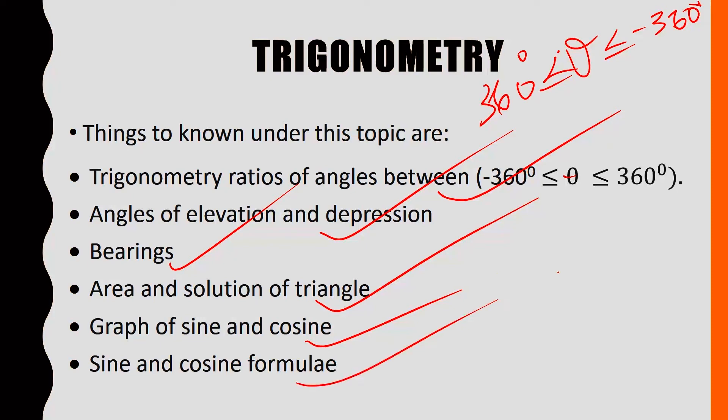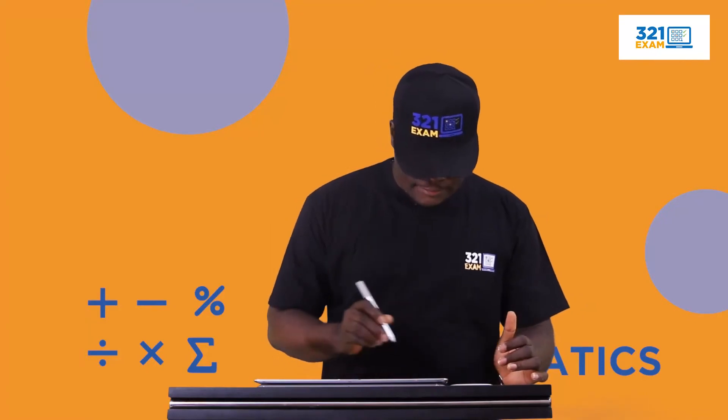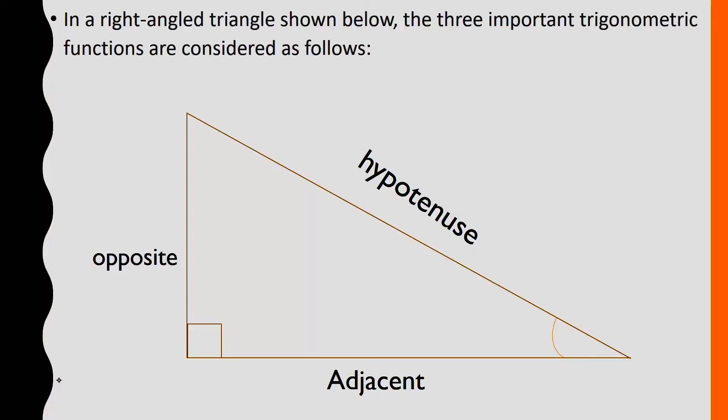And finally, sine and cosine formulae, when do we apply them, will be looked at. But that will go a long way with the bearings. Now on the very first thing, trigonometry. Trigonometrical ratio of angles between positive 360 to minus 360 degrees.